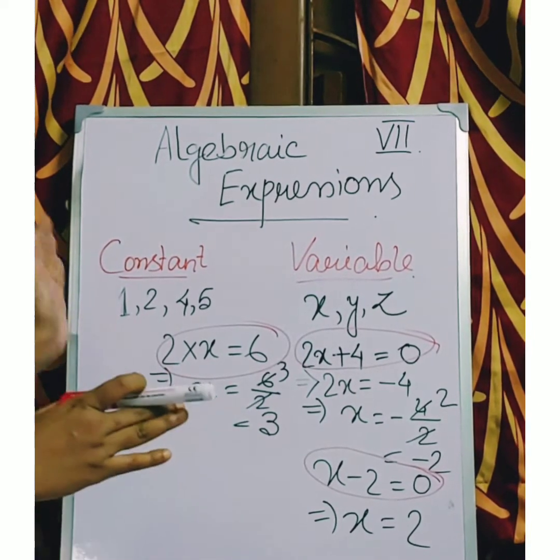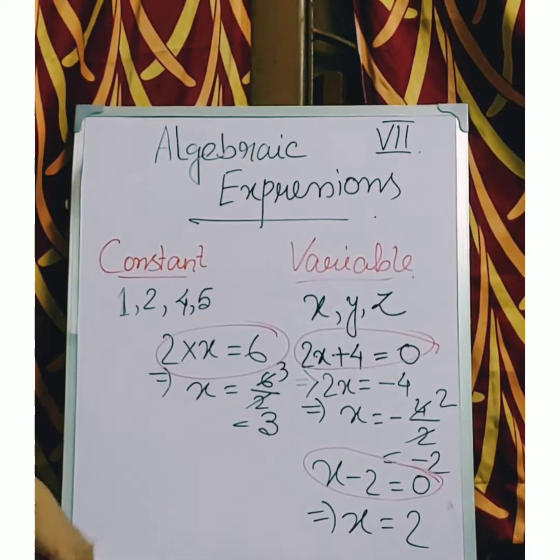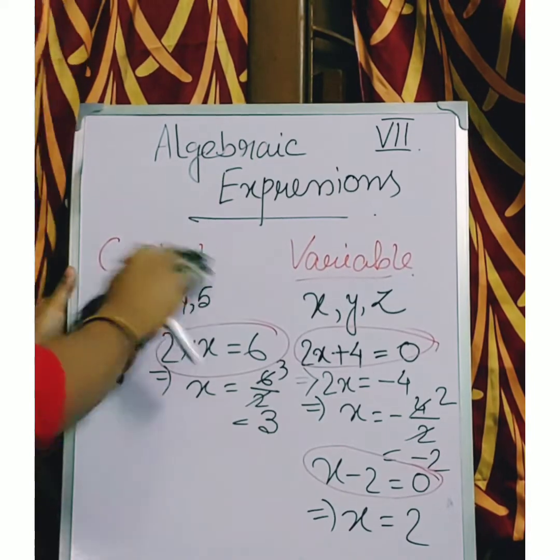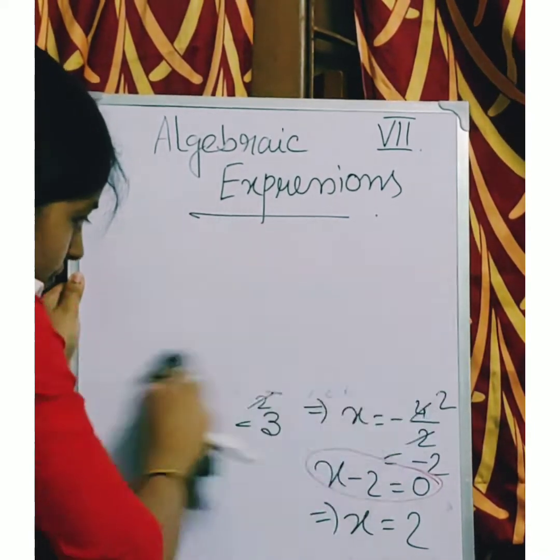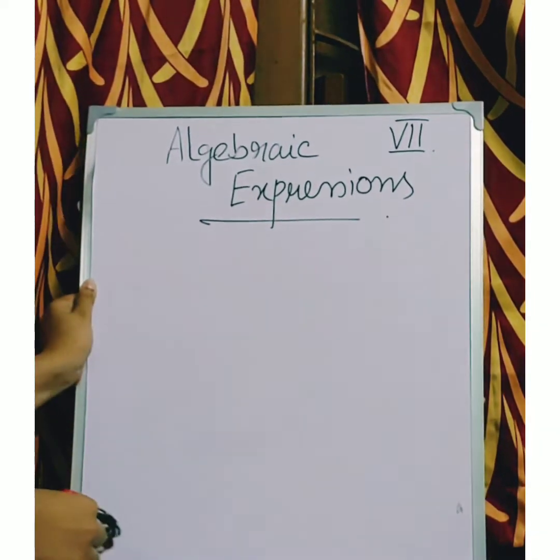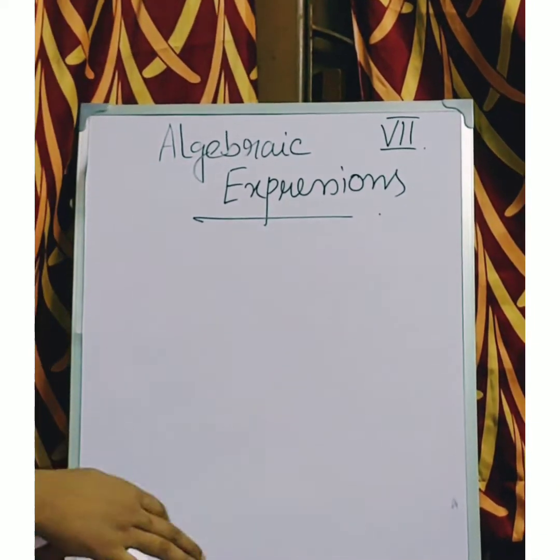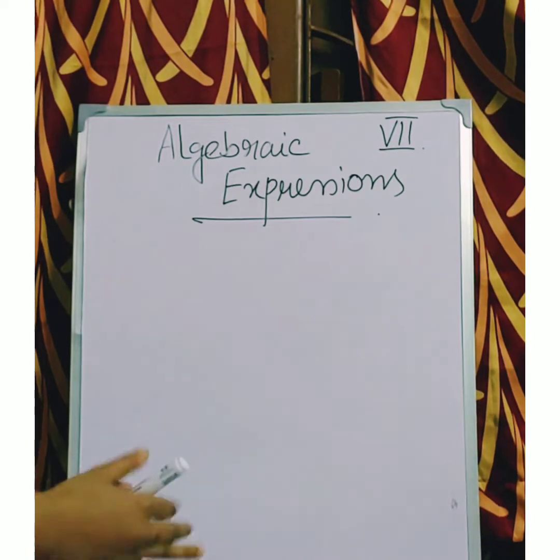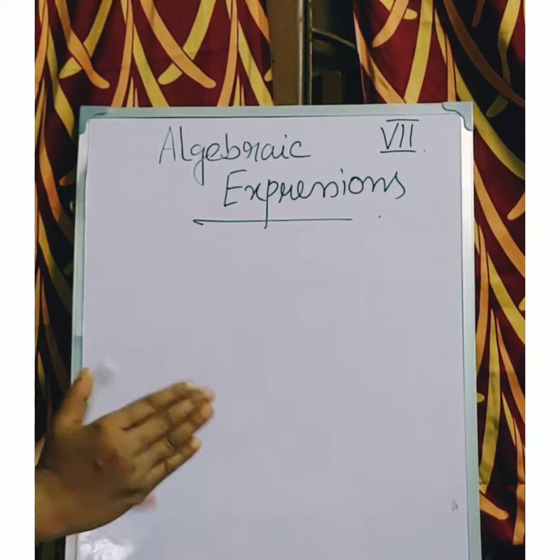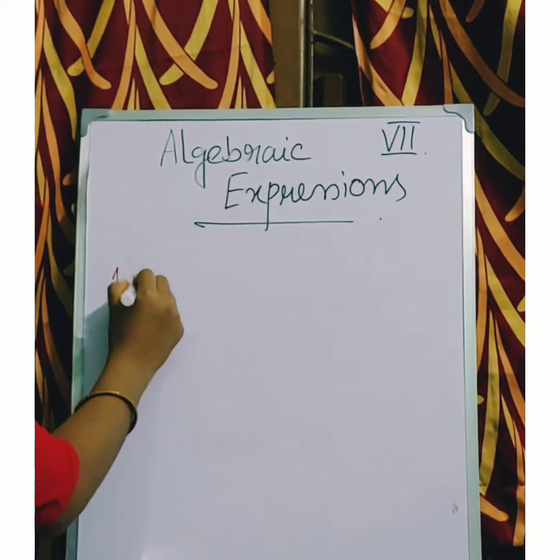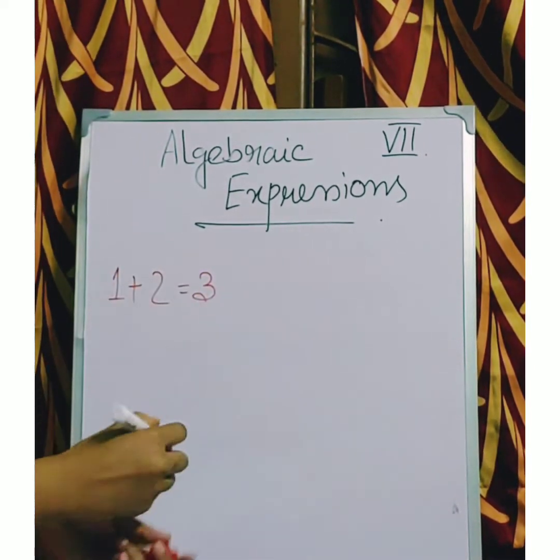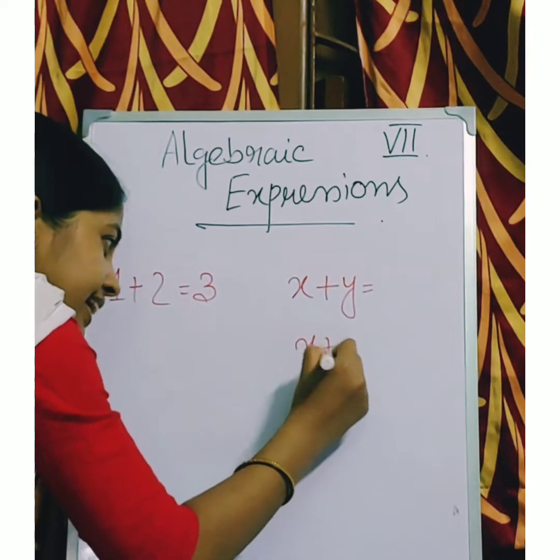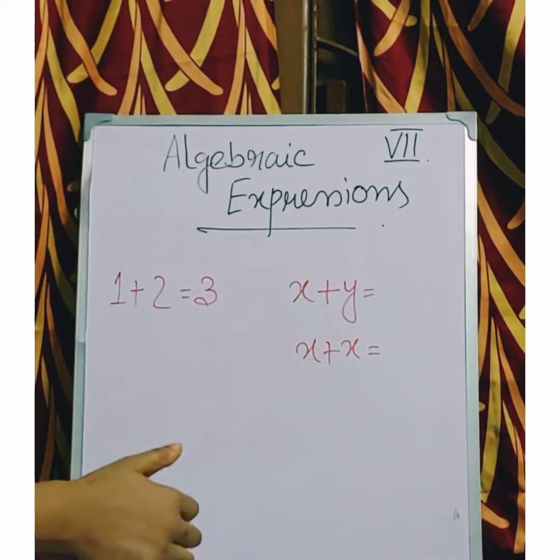I hope you have understood what is constant and what is variable. Now we will come to different operations which we do in algebra. Constant and variables. Let me show you addition of constant and addition of variables. 1 plus 2 equals 3. We all know. Now I am taking 2 variables: x plus y and x plus x.